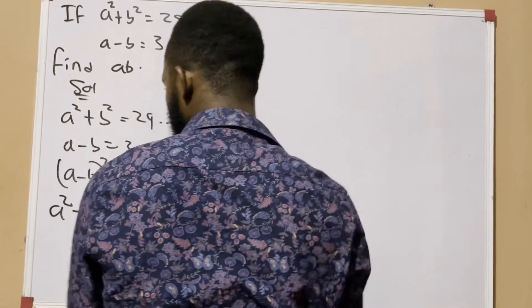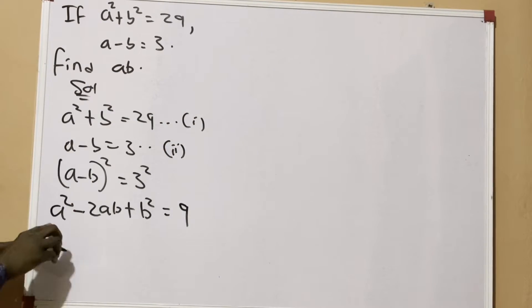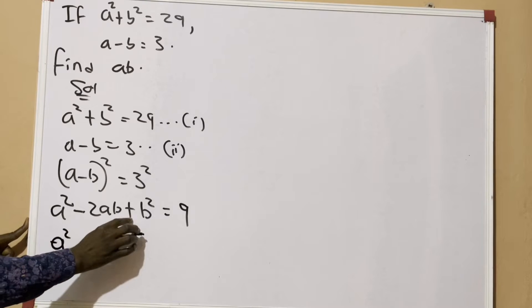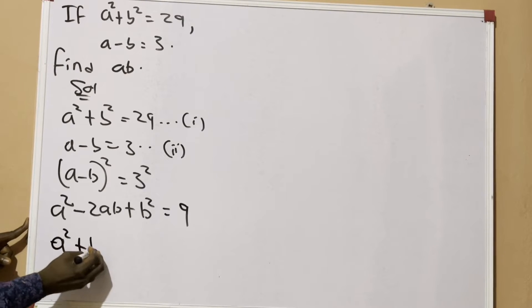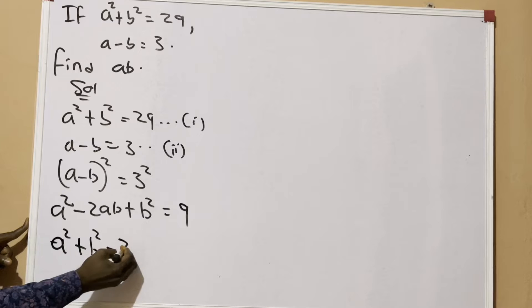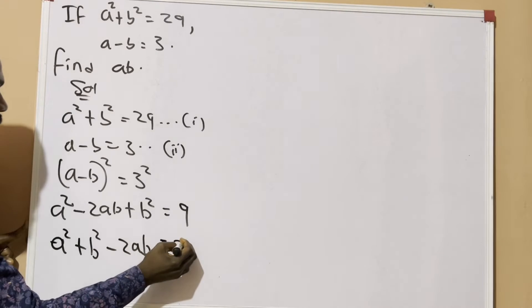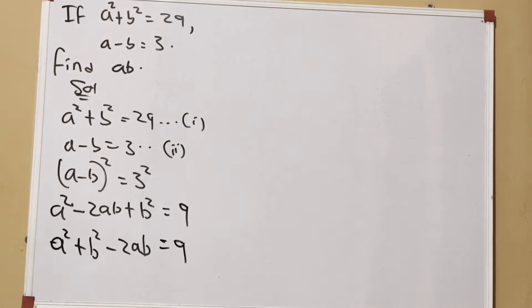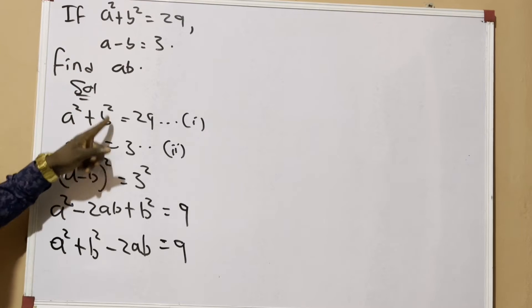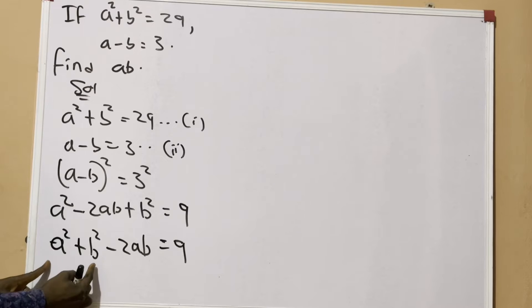Don't forget that this also can be written as a² + b² - 2ab = 9. Now let's go back to equation 1. Equation 1 was given as a² + b² = 29, which means where I have a² + b², I'll put 29.